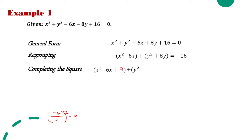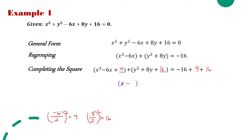For y² + 8y, we need to make it a perfect square trinomial: (8/2)² = 16, so we add 16. The equation becomes (x² - 6x + 9) + (y² + 8y + 16) = -16. Since we added 9 and 16 to the left side, we add them to the right side as well. By factoring, we get (x - 3)² + (y - 4)² = -16 + 9 + 16 = 9.